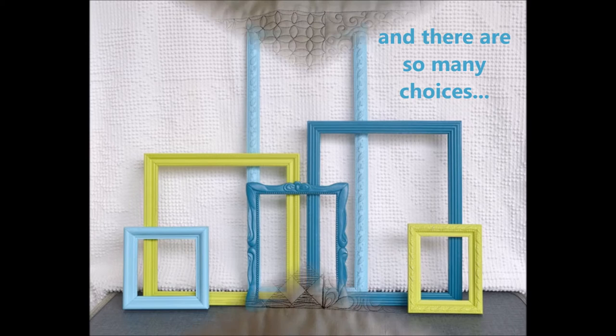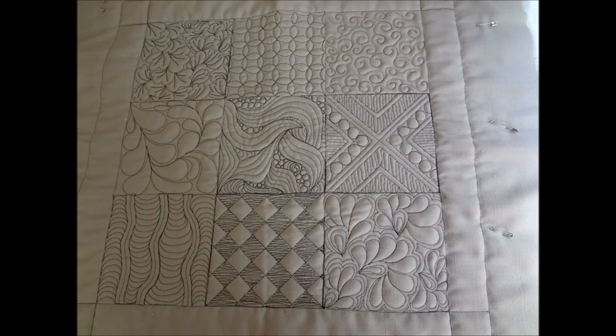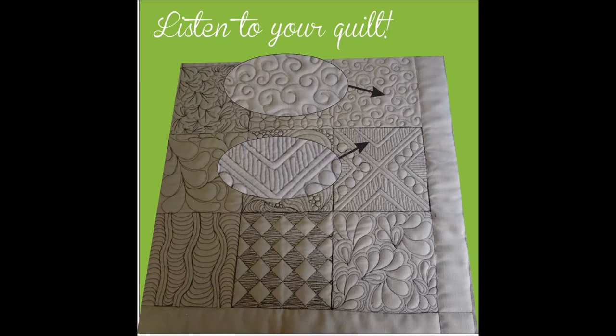Well, let's take a look at what you're going to sash or border and let it give you a clue. I hear it calling out, hey, there's some swirls, and there's some diagonal lines I could use.